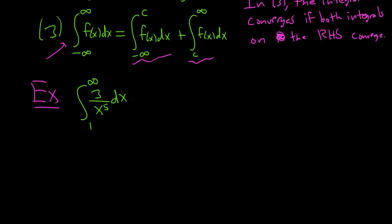So let's go ahead and try to evaluate this. We'll start by writing it as the limit as b approaches infinity of the integral from 1 to b. Then we have 3 over x to the fifth dx. So all we've done is we've replaced the infinity with the letter b or the variable b, and we've let b approach infinity.